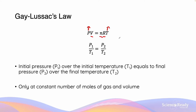Thus, after a given change in temperature or pressure, because they're directly proportional, the initial pressure P1 divided by the initial temperature T1 should equal the final pressure P2 divided by the final temperature T2. It's important to recognise that this relationship only holds true when the other variables are held constant, which in this case is the number of moles of gas and the volume.